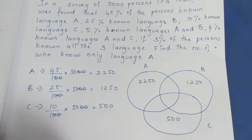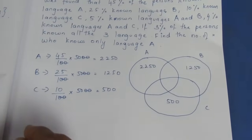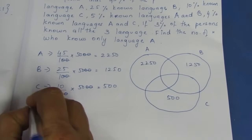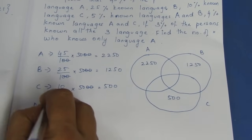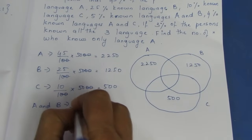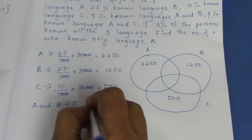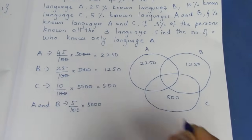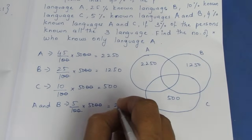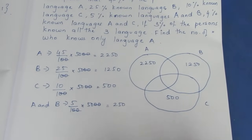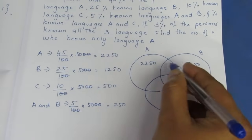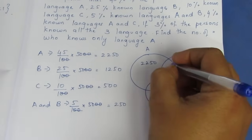A and B is 5%. So A intersection B is 5 divided by 100 into 5000. Cancelling 20 and 20, we get 250. So A intersection B is 250.